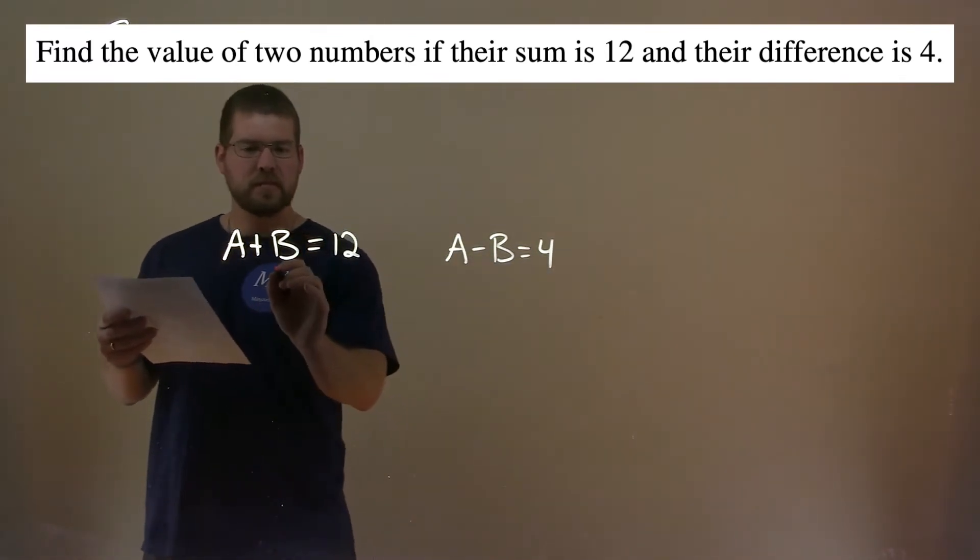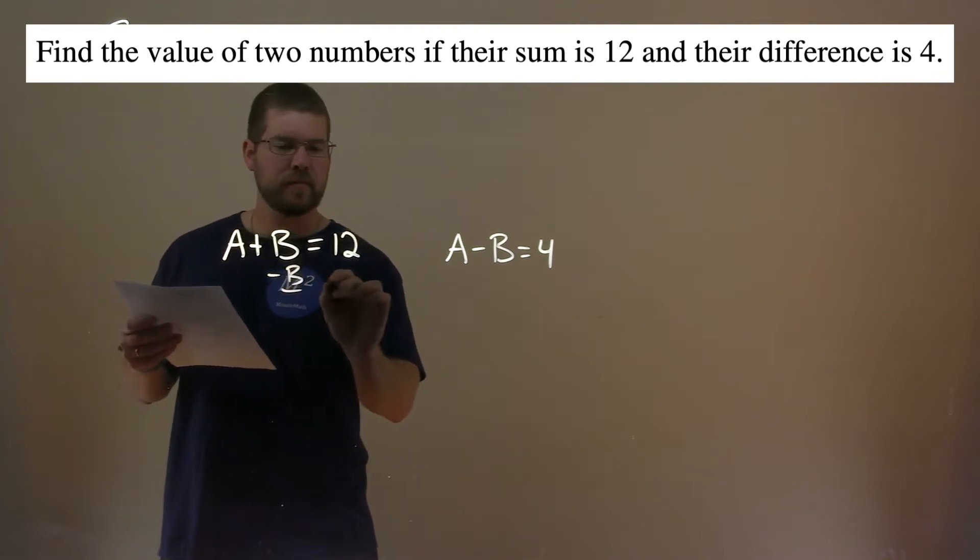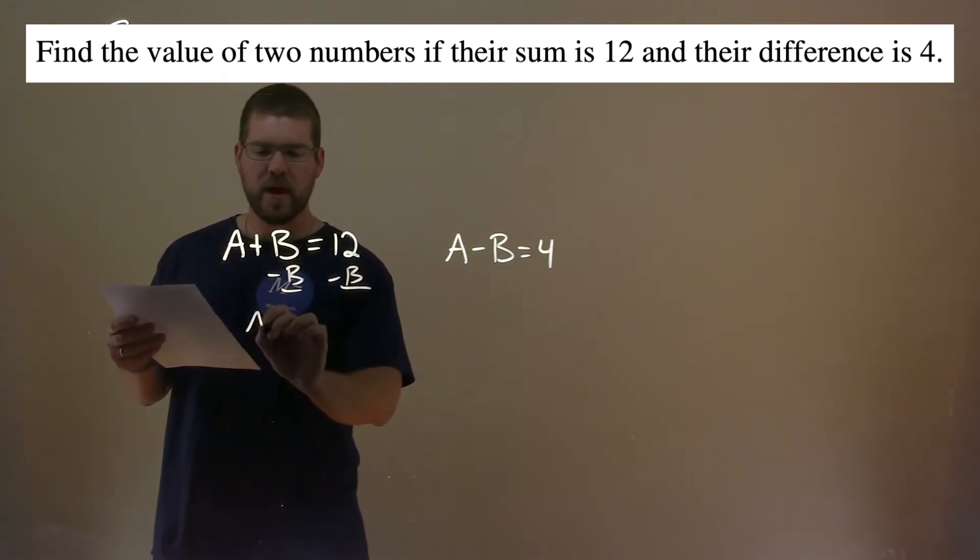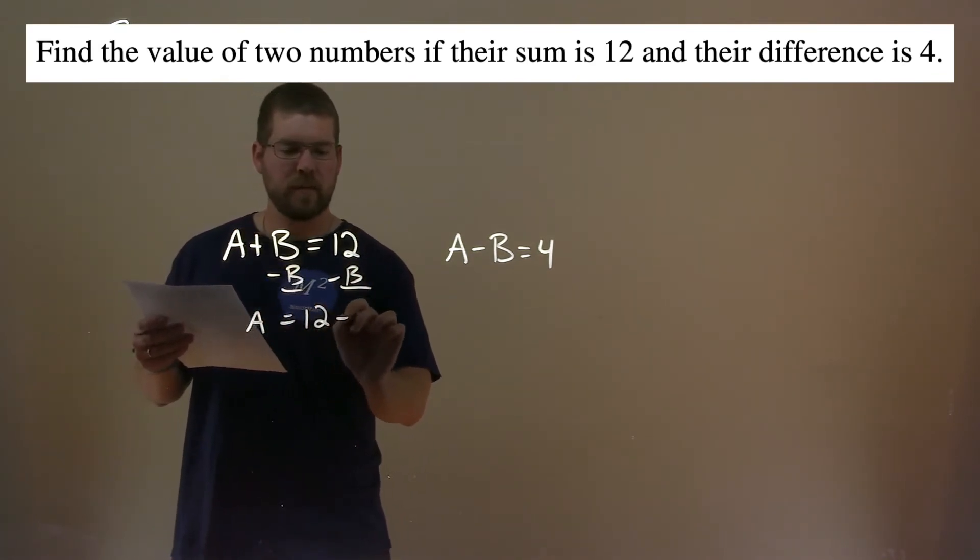Alright, let's subtract B from both sides here, and we're left with A by itself, equals 12 minus B.